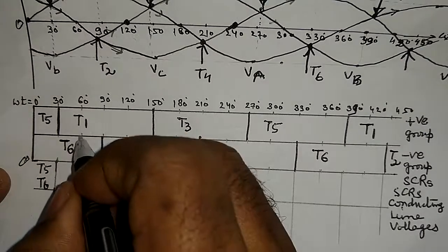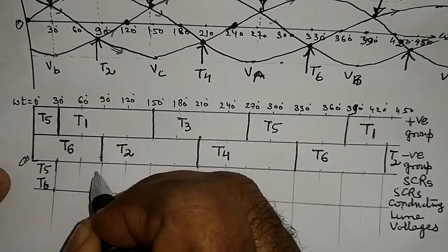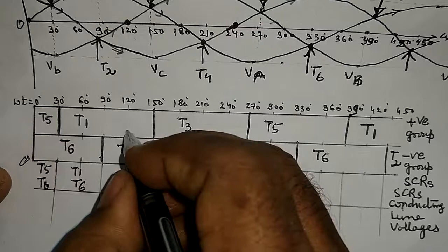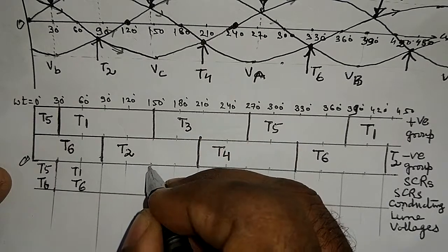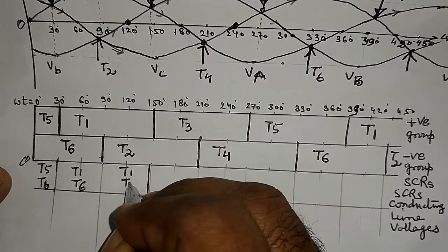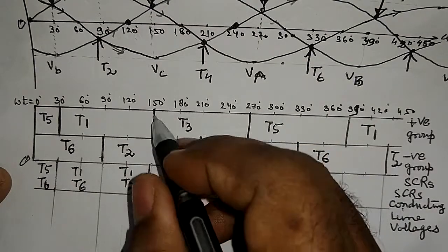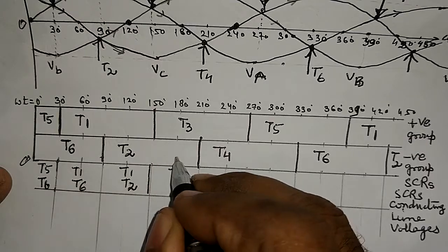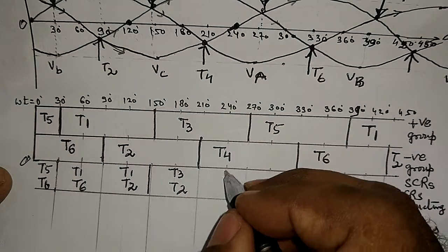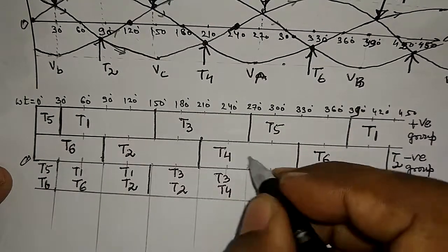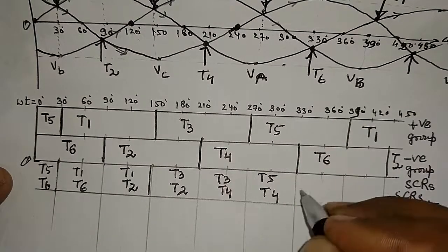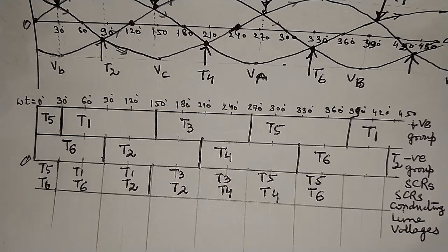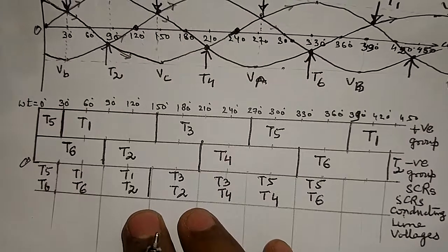For each 60° interval, one SCR from the positive group and one from the negative group conduct simultaneously: from 0°–30°, T5 and T6; from 30°–90°, T1 and T6; from 90°–150°, T1 and T2; from 150°–210°, T3 and T2; from 210°–270°, T3 and T4; from 270°–330°, T5 and T4; and then T5 and T6 again. Two SCRs conduct for every 60° interval.